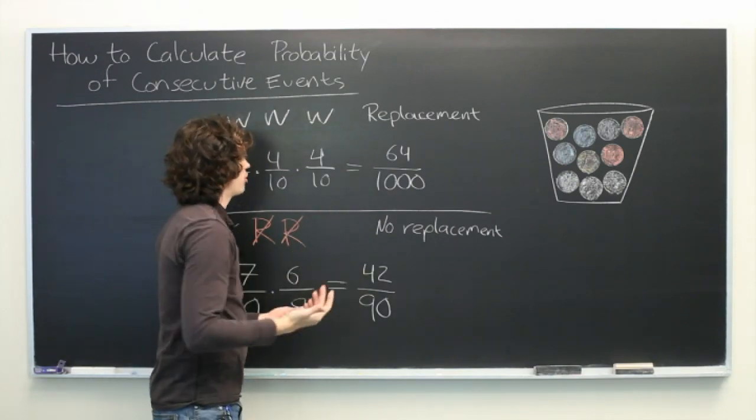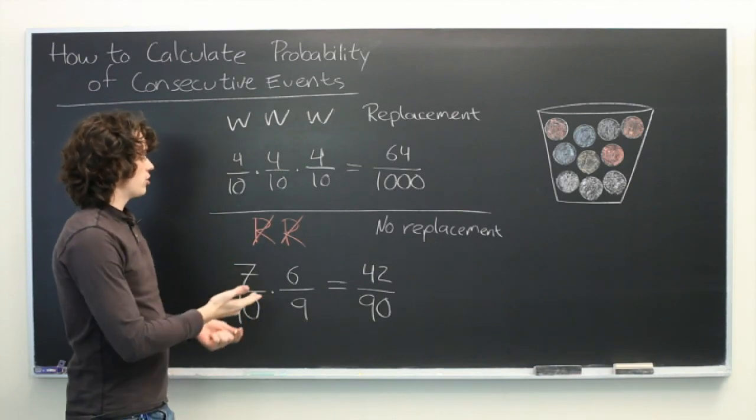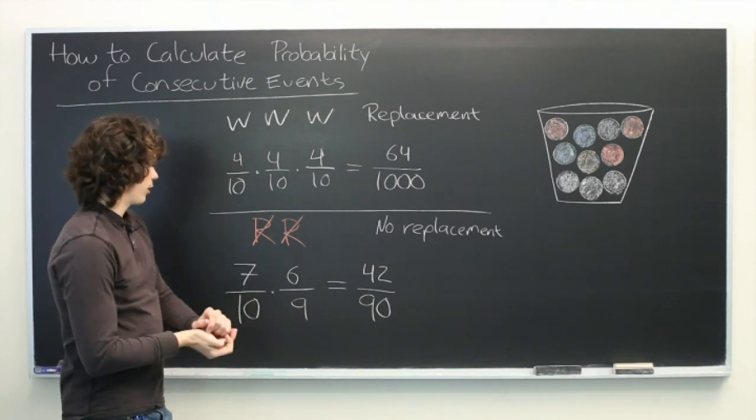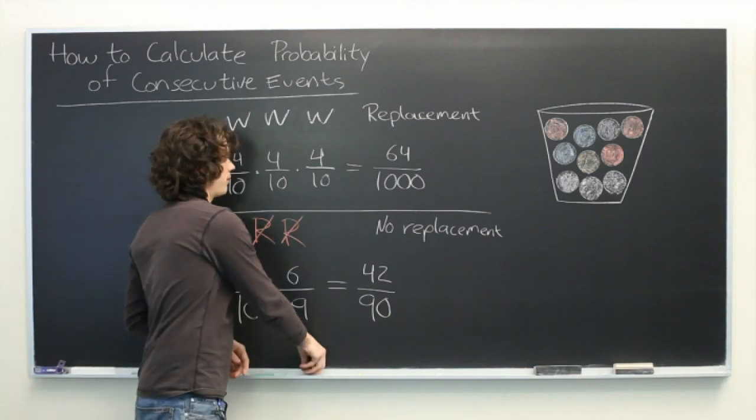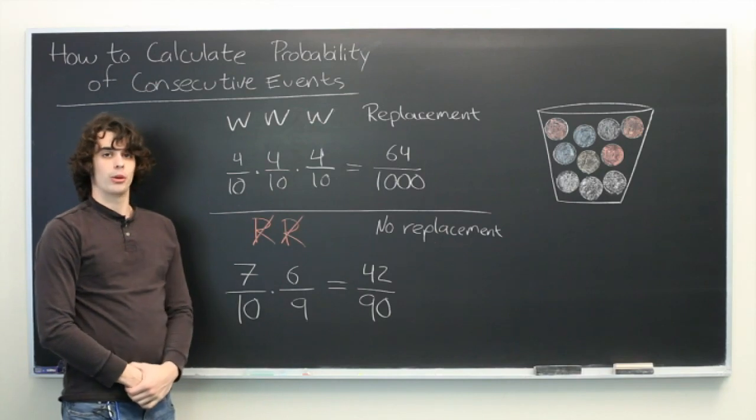In both of these cases, you can simplify the fractions if the problem specifies to do so, but these are both accurate statements. It's not strictly necessary to reduce the fraction. And that's essentially all there is to it. My name is Ryan Malloy and we've just discussed how to calculate the probability of consecutive events.